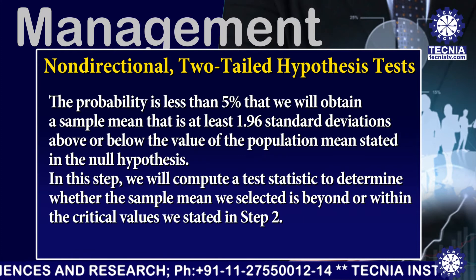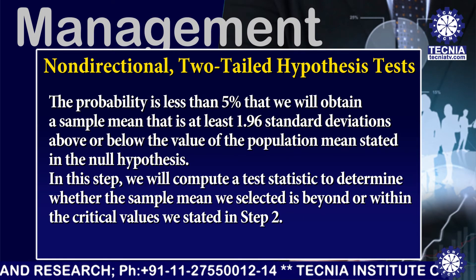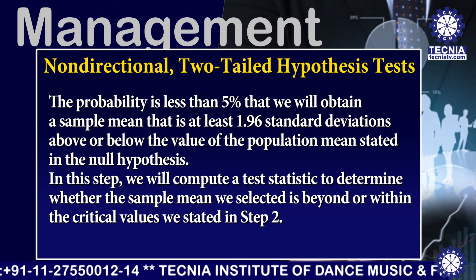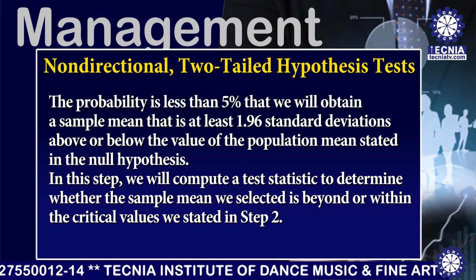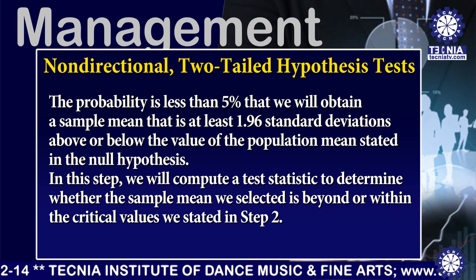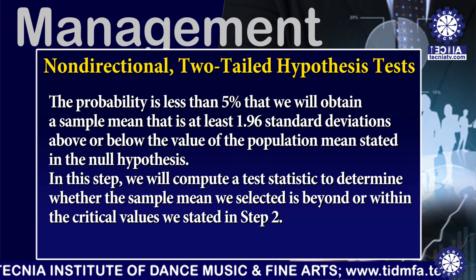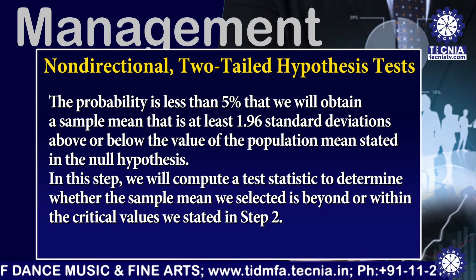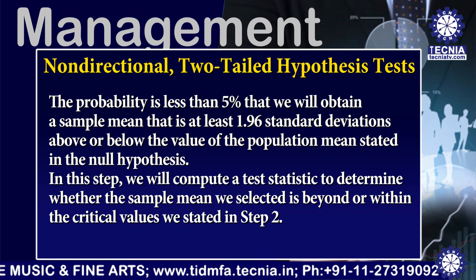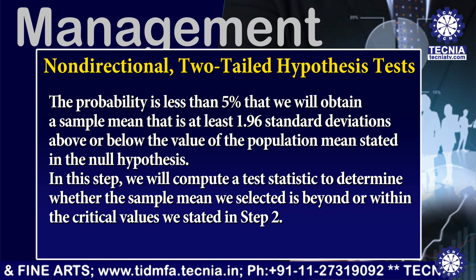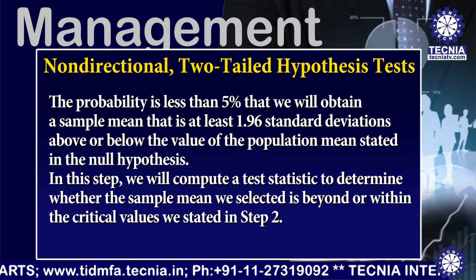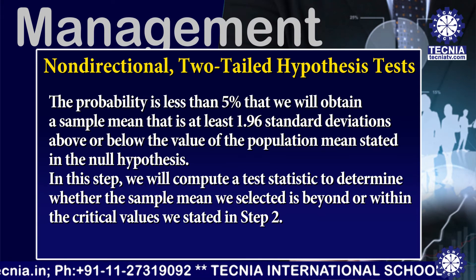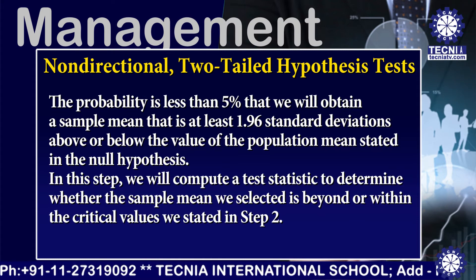Step 3: the probability is less than 5% that we will obtain a sample mean that is at least 1.96 standard deviations above or below the value of the population mean stated in the null hypothesis. In this step, we compute a test statistic to determine whether the sample mean we selected is beyond or within the critical values stated in Step 2.